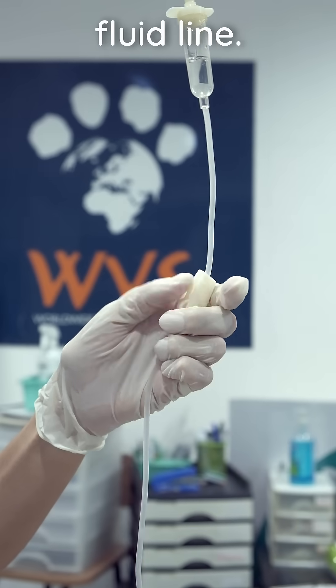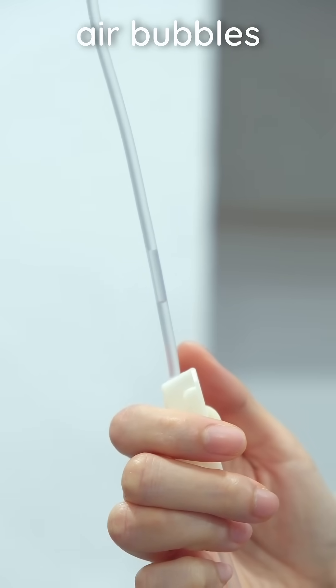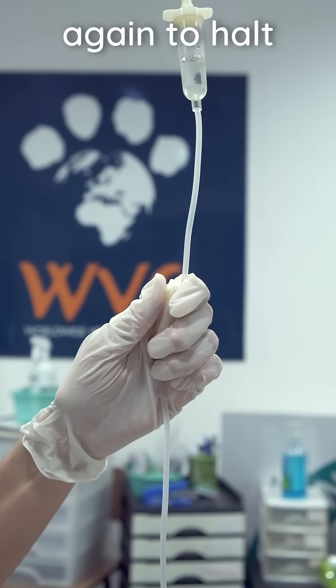Slowly open the roller clamp to fill the fluid line. Ensure no large air bubbles remain within the line. Close the roller clamp again to halt fluid flow.